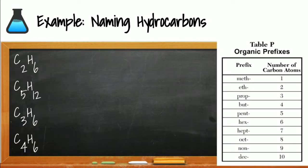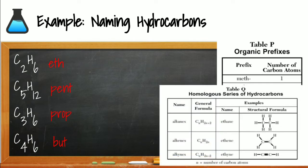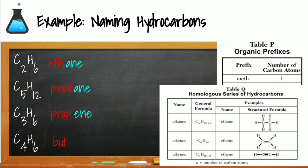Let's do a few examples together. The first has two carbons — that's eth. The second would be pent, the third is prop, and the fourth is but. C2H6: six is more than double two, so that's an alkane — ethane. C5H12: 12 is more than double five, so that's another alkane — pentane. C3H6: six is exactly double three, so that's an alkene — propene. And C4H6: six is less than double four, so that's an alkyne — butyne.